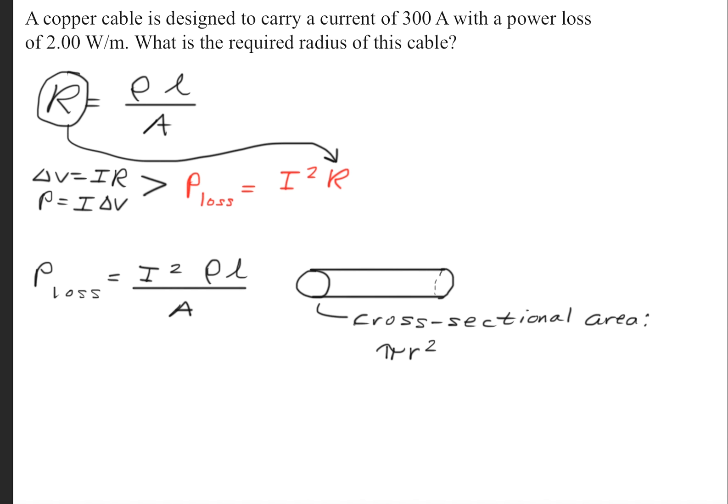So once again, the cross-sectional area will be pi R squared because this cable is a perfect cylinder, so to speak. So we'll make that substitution here. We'll get that P equals I squared times the resistivity times the length over pi R squared.